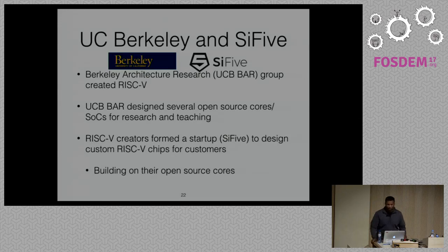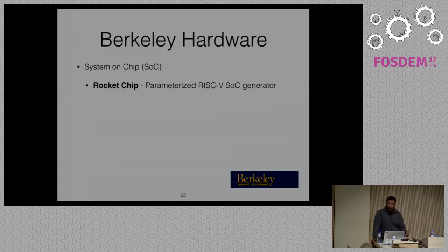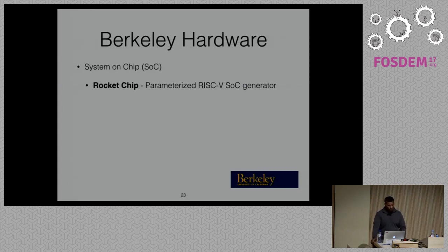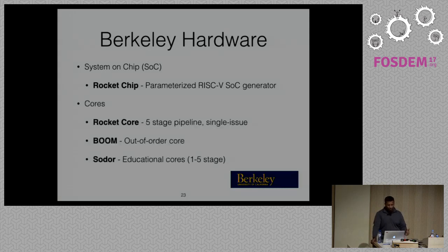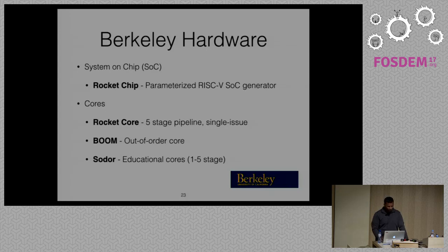Berkeley's hardware includes the Rocket Chip — a parameterized RISC-V SOC generator. You can tweak the cache hierarchy, number of cores, TLB size, and whether there's a floating-point unit. Cores include the standard Rocket core (five-stage pipeline, single issue), BOOM (an out-of-order core, a research project by Chris Celio), and the SODOR educational cores — one-stage through five-stage, designed for simplicity in university courses. All code is on GitHub.